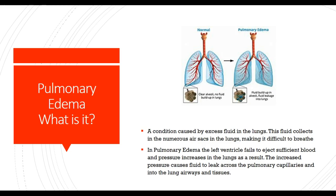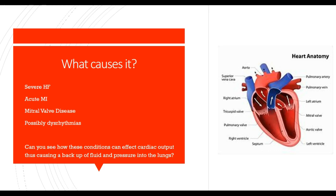So, pulmonary edema — what is pulmonary edema? It's a condition caused by excessive fluid in the lungs. The fluid collects in numerous air sacs in the lungs, making it difficult to breathe. In pulmonary edema, the left ventricle fails to eject sufficient blood and pressure increases in the lungs. As a result, the increased pressure causes fluid to leak across the pulmonary capillaries and into lung airways and tissues. This can be caused by severe heart failure, acute MI, mitral valve disease, or dysrhythmias.